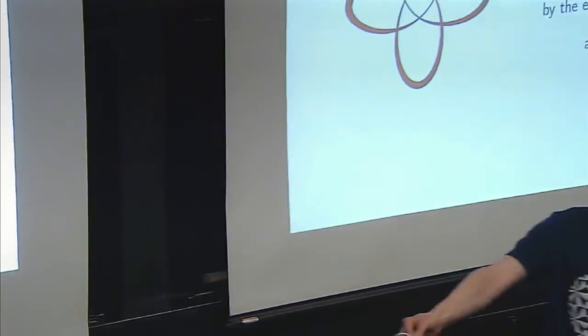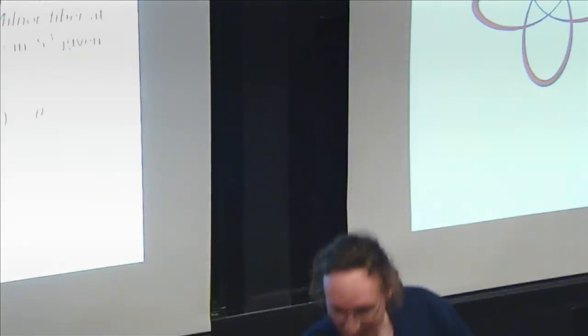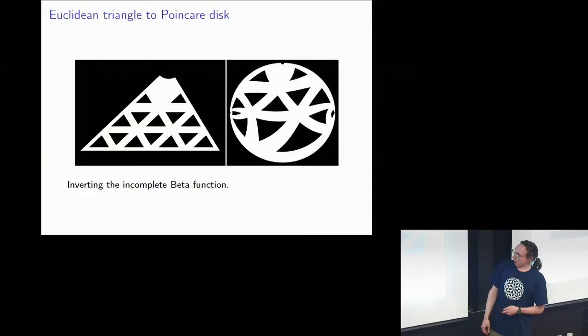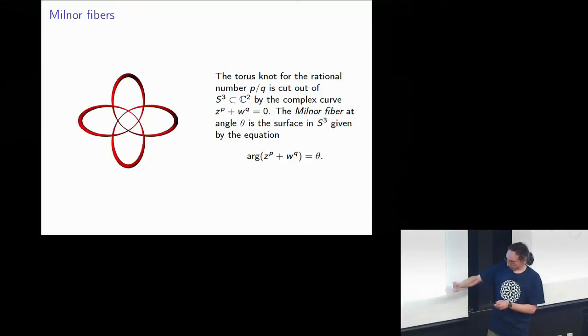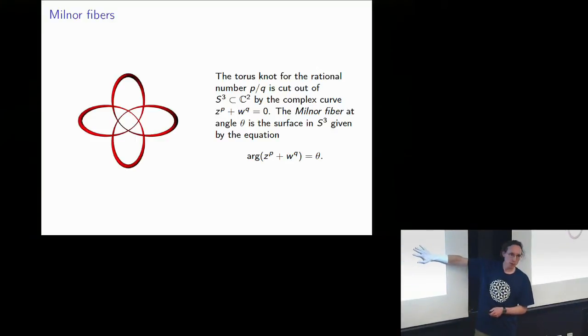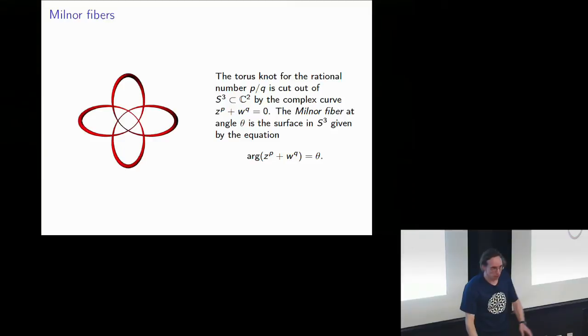Here is a torus knot to pass around — the 3,2 torus knot, also known as the trefoil knot that appears in the logo. The Milnor fiber gives us Seifert surfaces for torus knots. An implicit description gives a test for whether you lie on the surface, while a parametrization gives you an explicit recipe. We need a parametrization so we can give it to the printer.